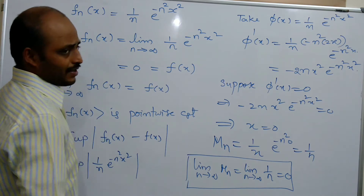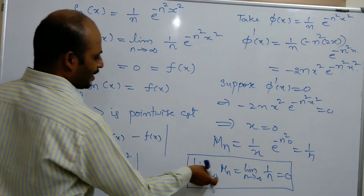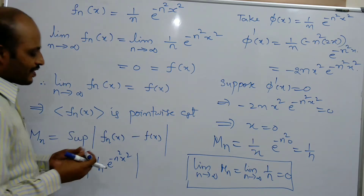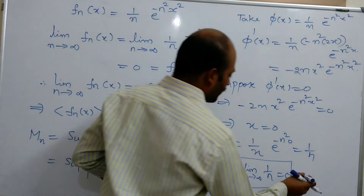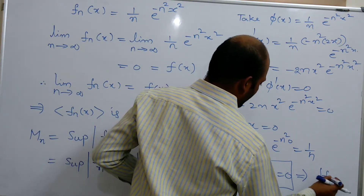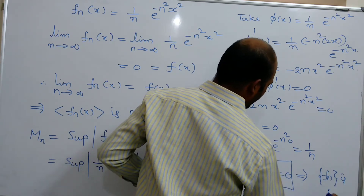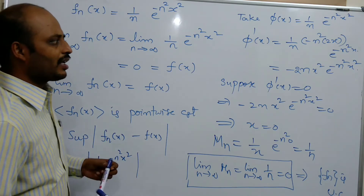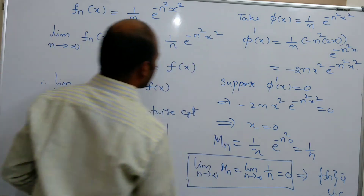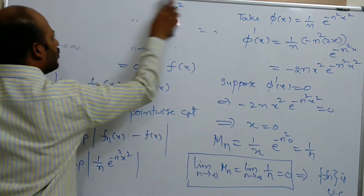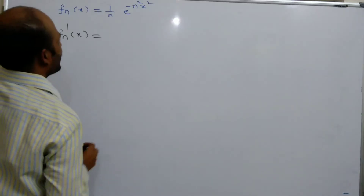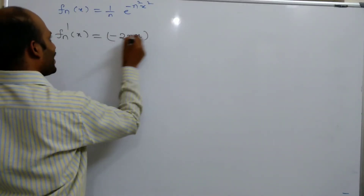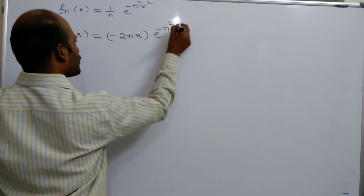Hence, the sequence of functions fn is uniformly convergent. We also find that fn'(x) = −2nx·e^(−n²x²).